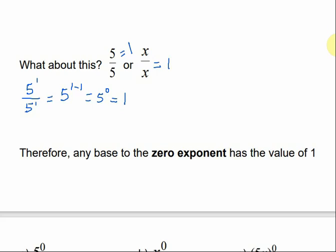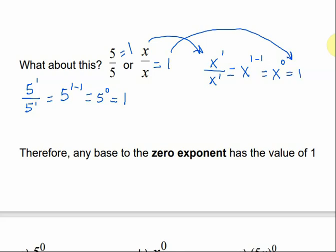Let me do that again with the x's. x to the 1st power divided by x to the 1st power is the same thing. By the quotient rule, that's x to the 1 minus 1, which is x to the 0. But we know what we started with equals 1, so x to the 0 must also equal 1. This proves our next rule — the zero exponent rule — which says any base with an exponent of 0 has a value of 1.